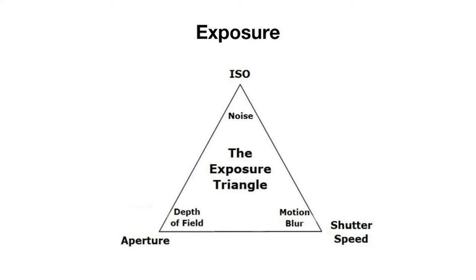Before doing so, it's important to understand these three variables and what they affect in the process of taking a photo. All three of these variables together make up what is called the exposure triangle, and all of them individually and in tandem will affect the overall exposure — the brightness or darkness of your image. However, all three of these variables have their own unique effect on the image outside of just the brightness or darkness or the overall exposure.